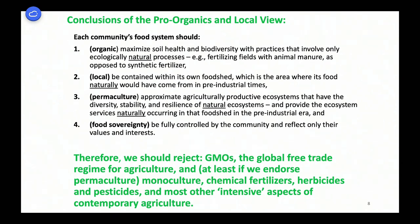The conclusions from this view are that each community's food system should be organic — to maximize soil health and involve only ecologically natural processes — local, constrained within its own food shed as in pre-industrial times; permaculture, involving perennial plants that keep the ground covered with vegetation at all times; and food sovereignty, controlled by the community and reflecting only their values. Therefore, we should reject GMOs, global free trade in agriculture, monocultures, chemical fertilizers, herbicides, pesticides, and other intensive aspects of contemporary agriculture.